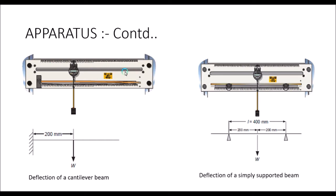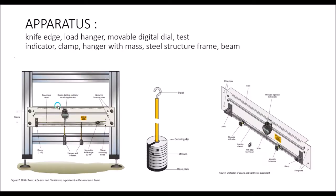This is a fixed type of support and this is a roller support. We can make a beam simply supported by clamping using pin-type supports. If you want to make the beam a fixed support, both sides will be clamped using this type of clamp, so it will act like a fixed support beam. We also have movable knife edges.